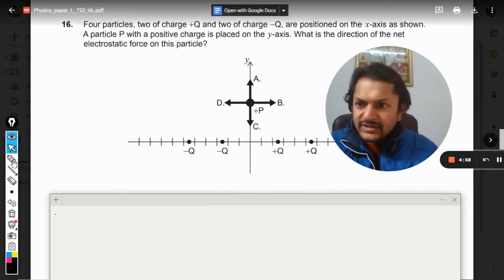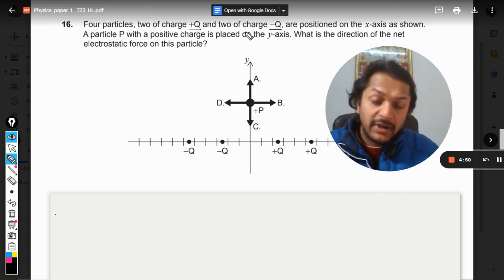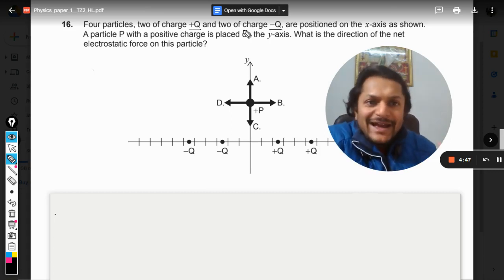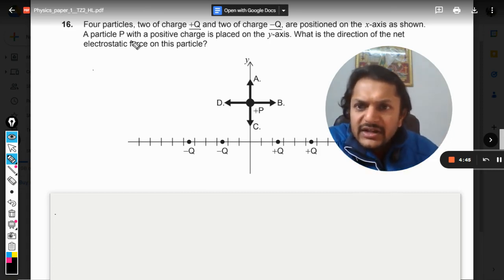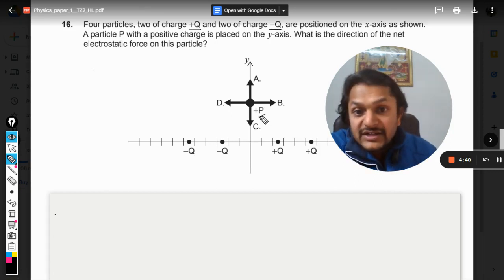Okay, dear students, let us see what is there in this question. Four particles: two of charges plus Q and two of charges minus Q are positioned on the x-axis as shown. A particle P with a positive charge is placed on the y-axis.